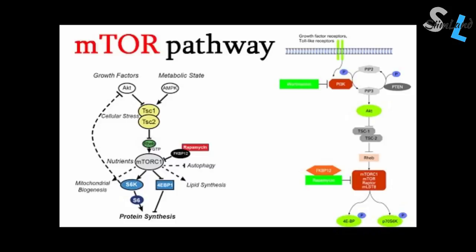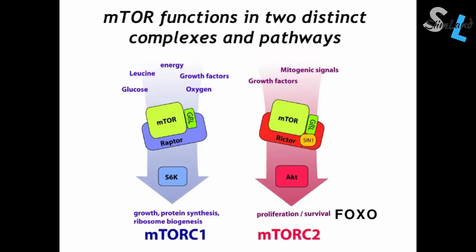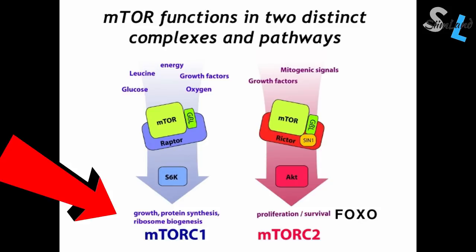Mechanistic or mammalian target of rapamycin — mTOR — is a protein kinase fuel sensor that monitors the energy stats of your cells. There are two mTOR complexes: mTOR-C1 and mTOR-C2. They stimulate cell growth, proliferation, DNA repair, protein synthesis, angiogenesis, muscle building, the immune system, and everything related to anabolism. mTOR-C1 functions as a nutrient sensor that controls protein synthesis.